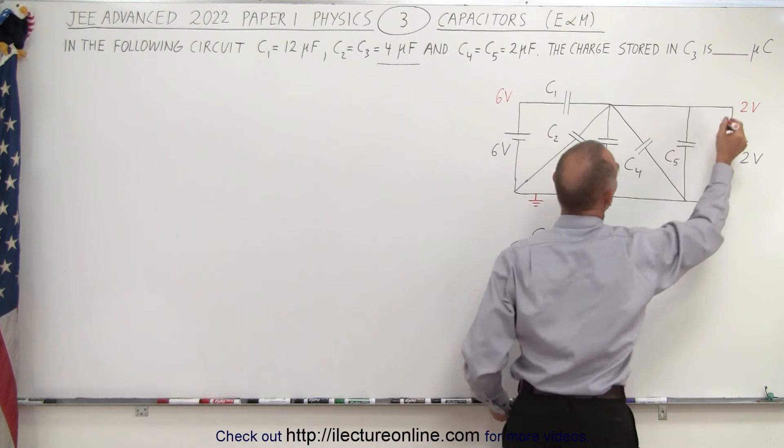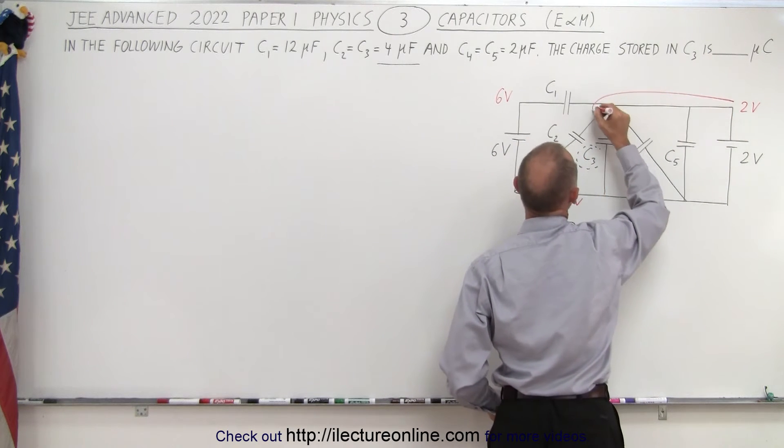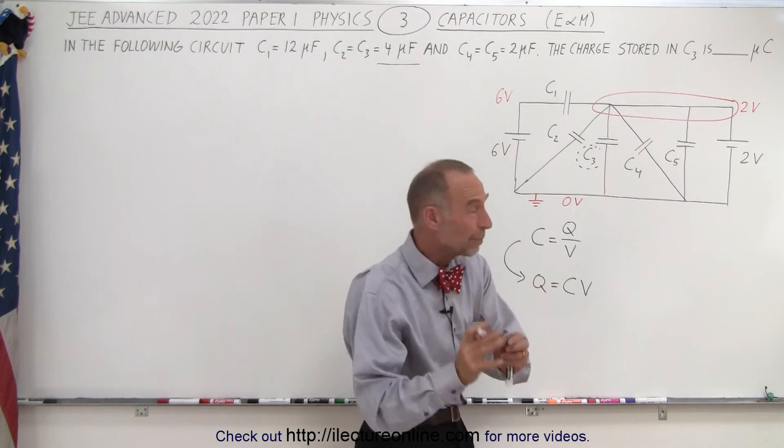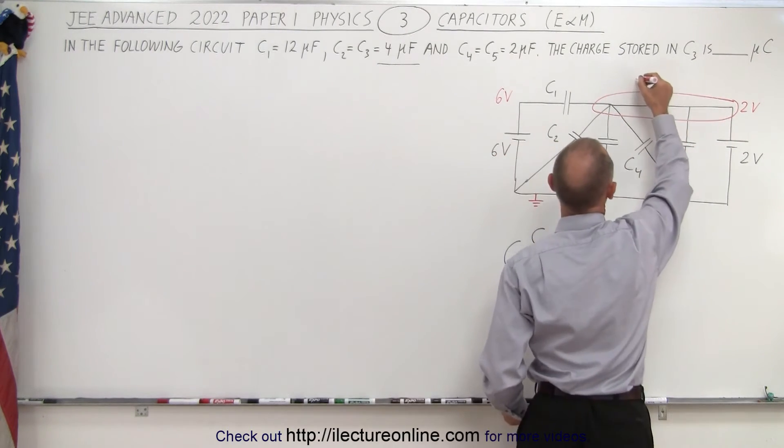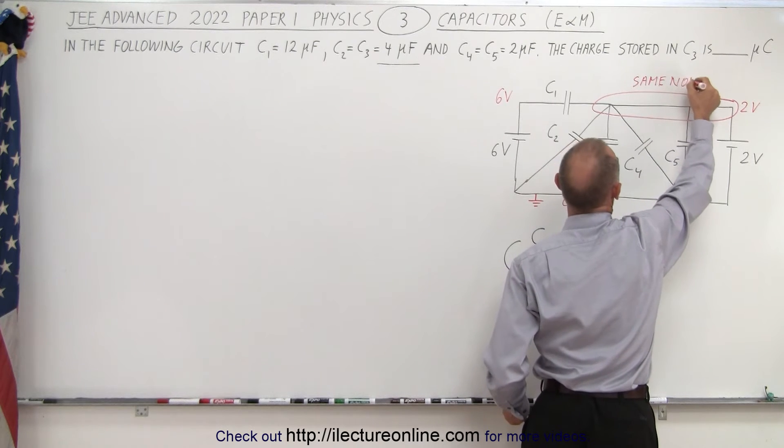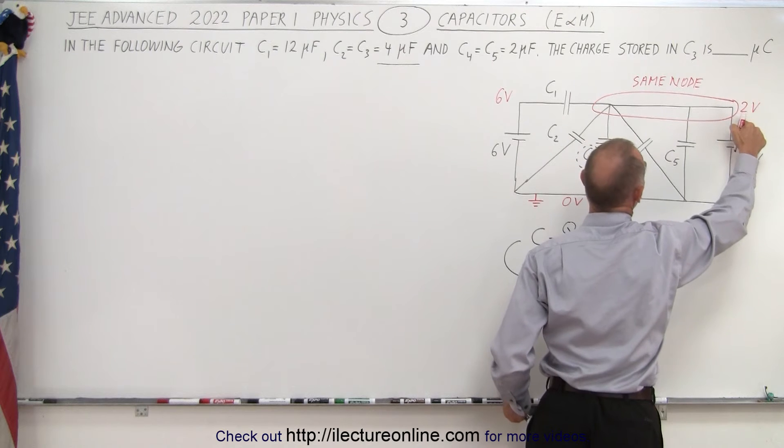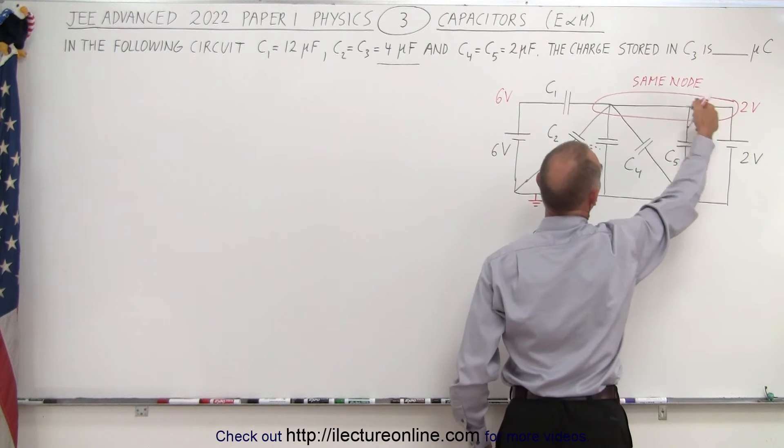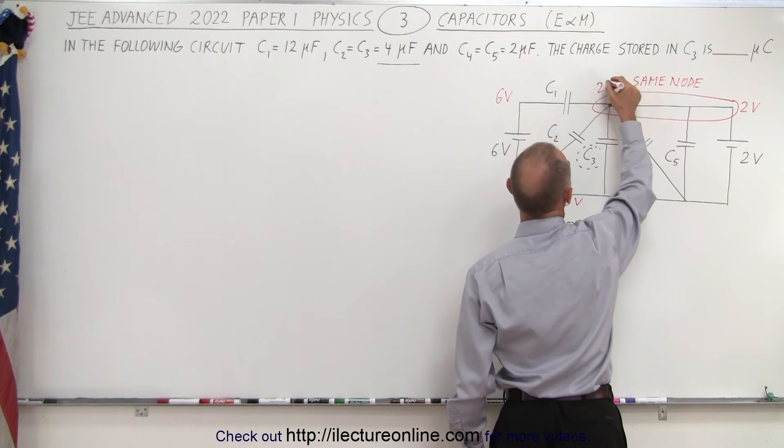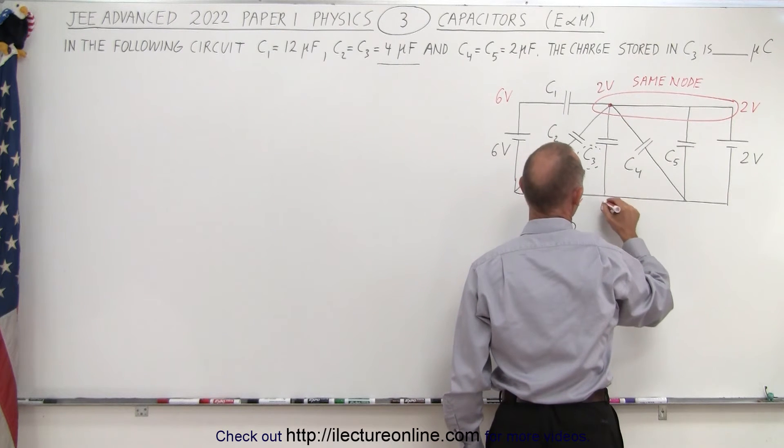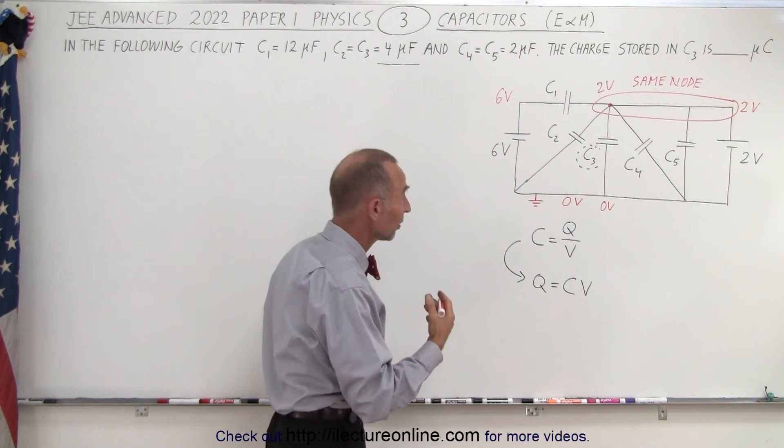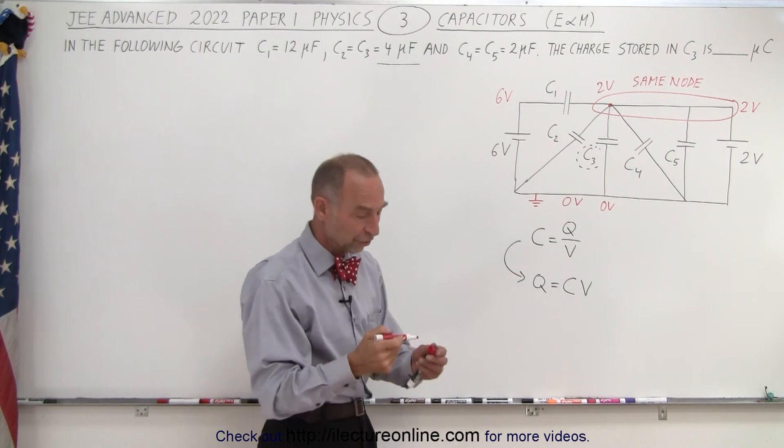Now, notice that this whole thing right here, there's no components anywhere in between, that is considered to be the very same node, that is all one node. Which means if this is at 2 volts, this entire area right here in the circuit is at 2 volts, which means over here this is at 2 volts as well, and down here this is at 0 volts. So now you can see that across that capacitor, C3, the voltage difference is 2 volts.